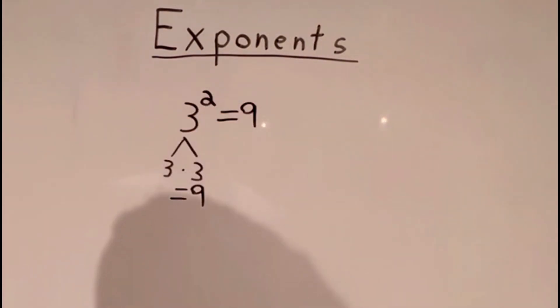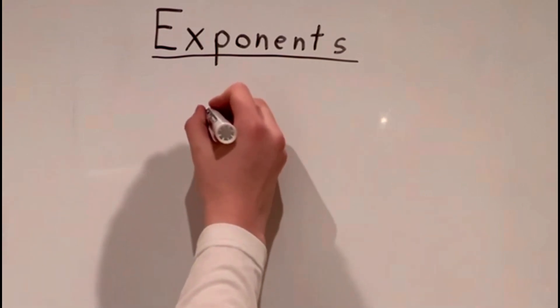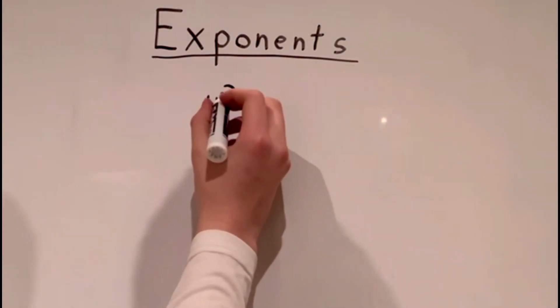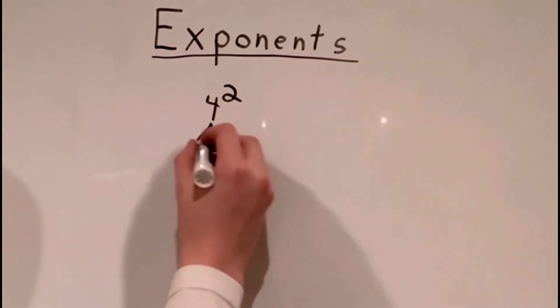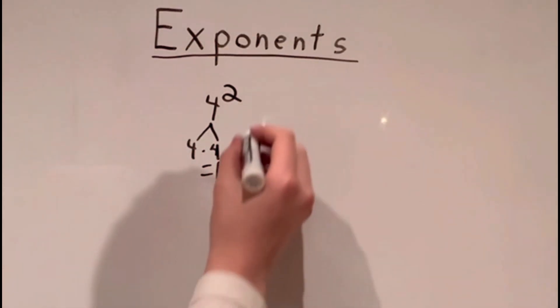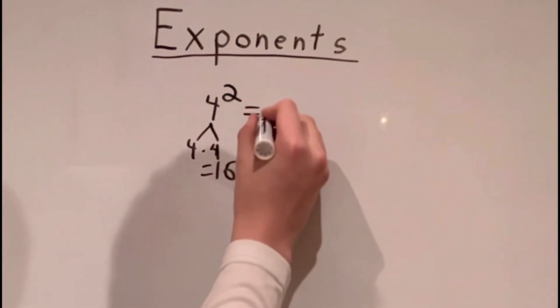So 3 squared equals 9. Now let's try another one. Let's try 4 squared. 4 multiplied by itself 2 times. So 4 times 4 equals 16. So 4 squared would equal 16.